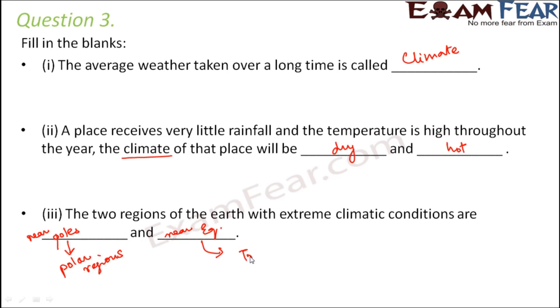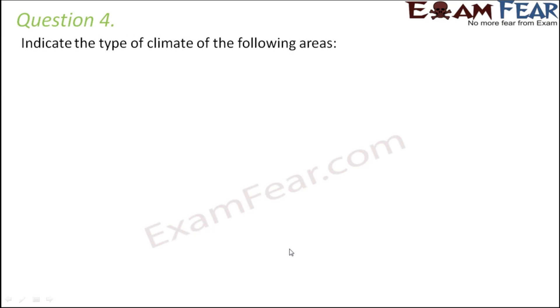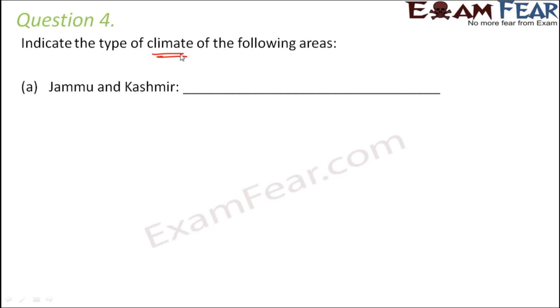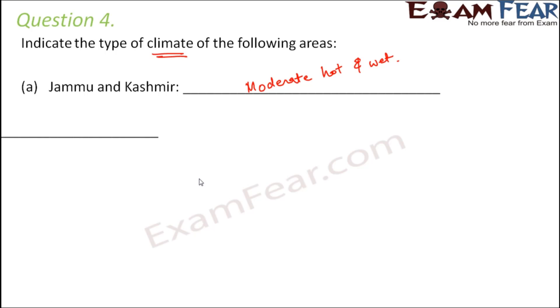Question number four: indicate the type of climate of the following areas. For Jammu and Kashmir — to give the accurate climate you need to study weather patterns for the last 10 to 15 years, but since we are aware of the weather in these parts of the country, Jammu and Kashmir has a moderately hot and moderately wet climate — summers are not that hot, so it's moderate heat and moderate wetness.